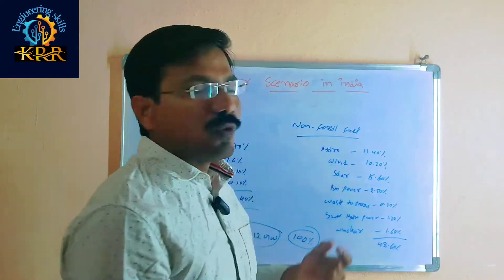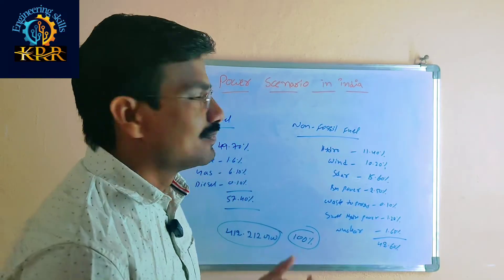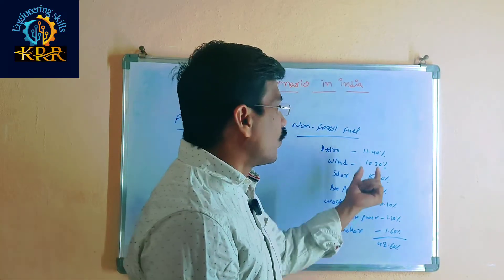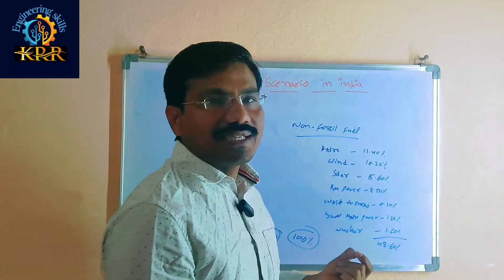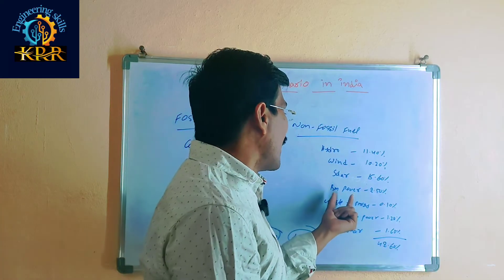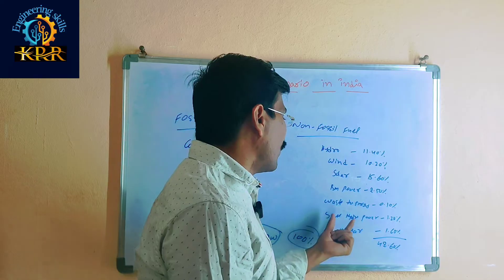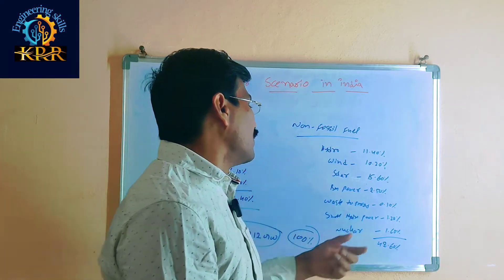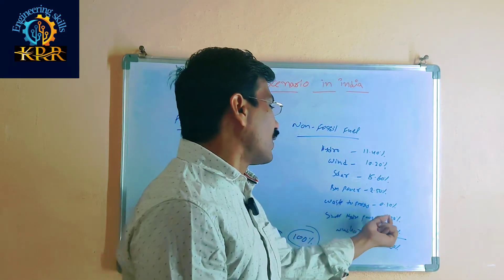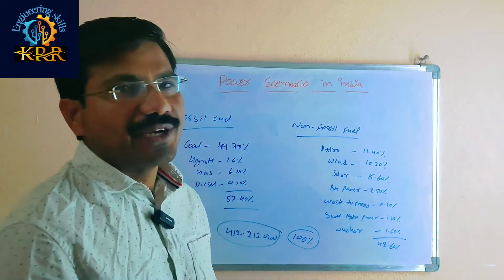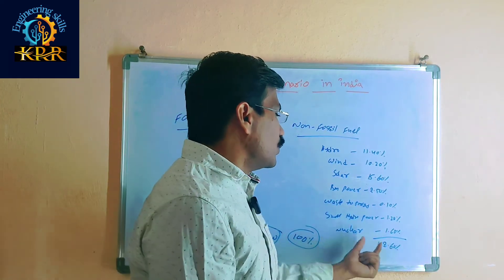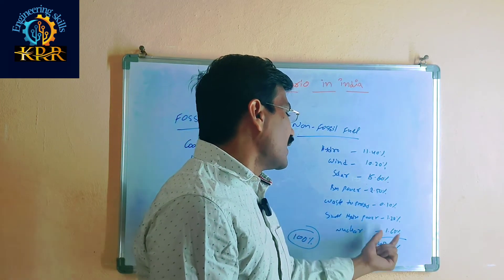For non-fossil fuel: hydro 1.40%, wind 10.40%, solar 15.60%, biomass power 2.50%, waste material 0.10%, small hydro power plants 1.20%, and nuclear 1.60%. These all come under renewable and non-fossil energy sources.